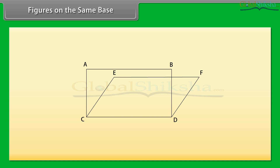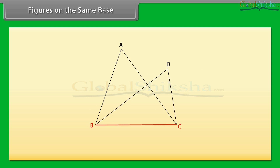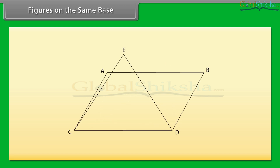Similarly, in this figure, triangle ABC and triangle BCD are on the same base, BC. Now, look at this figure. Here, triangle ECD and parallelogram ABCD are on the same base, CD.